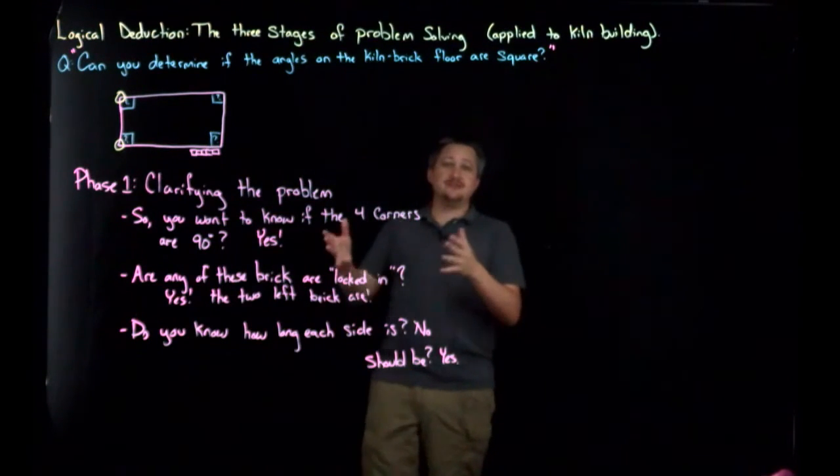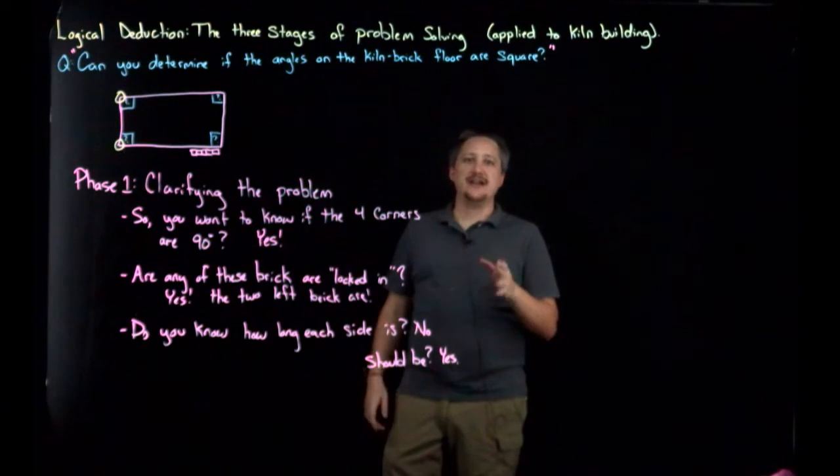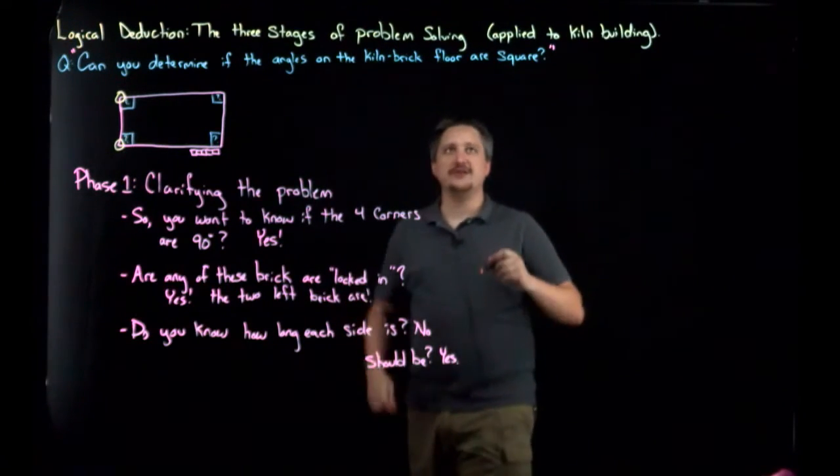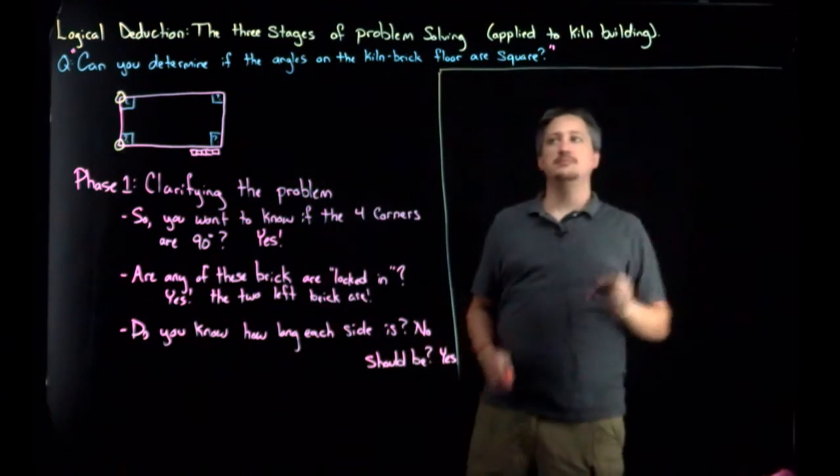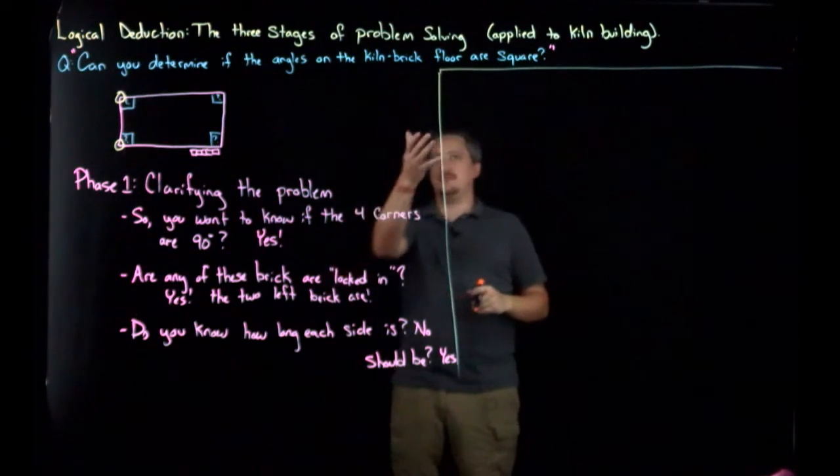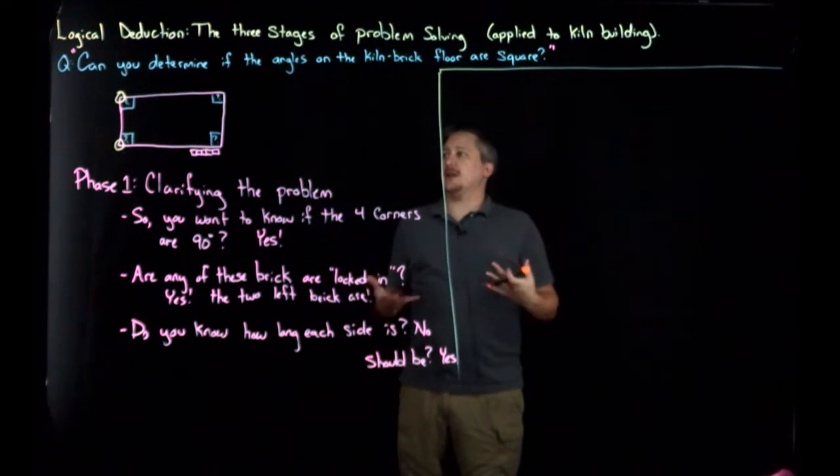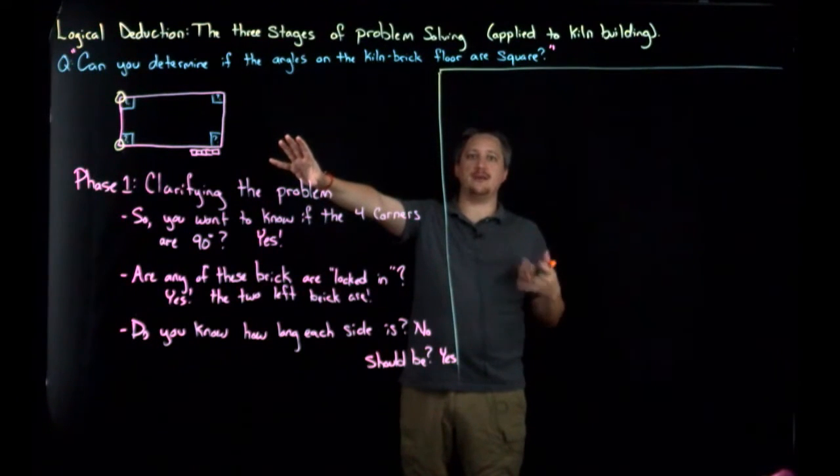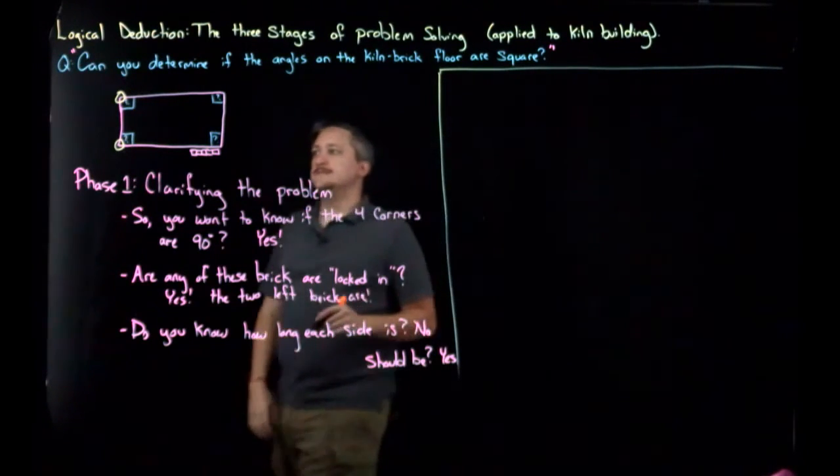So, I took the problem that she had given me and I reworked it into a classic math problem. Instead of saying, can you tell if these angles on the bricks are square, I thought about it. The rectangle can be difficult to deal with for geometry. In geometry, you tend to deal more with triangles and building things up with triangles. So, instead, I looked at the triangle that is formed.